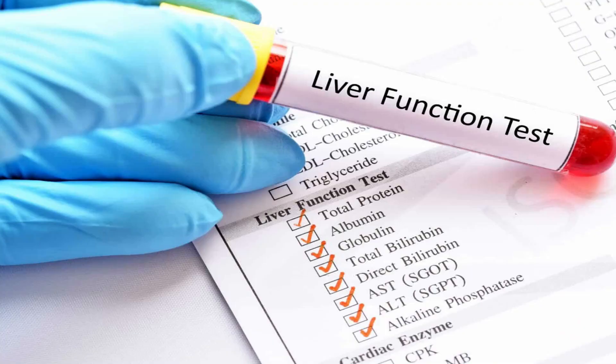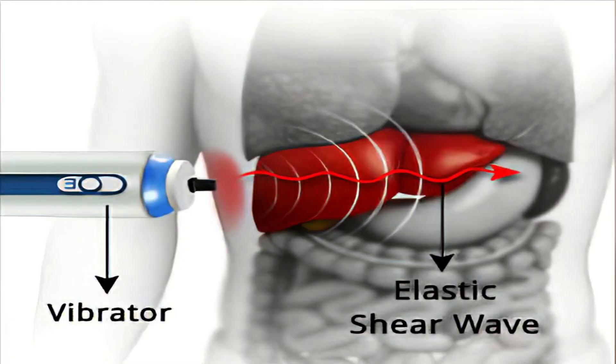To diagnose fatty liver, the commonly used investigation is ultrasonography. After diagnosis, the doctor will advise blood investigations like liver function tests — including SGPT, SGOT, and bilirubin levels. Other blood tests include HBsAg for hepatitis B, HCV antibody test for hepatitis C, thyroid profile, lipid profile, and blood sugar.